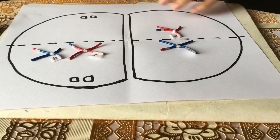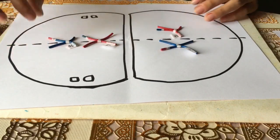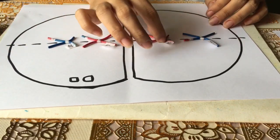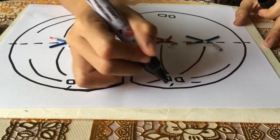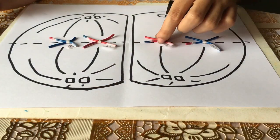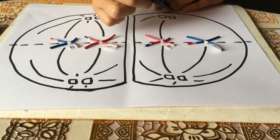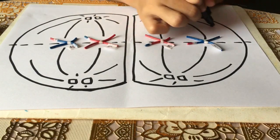In metaphase II, in each of the two daughter cells, the chromosomes line up end to end along the equator of the cell. The centrioles are now at opposite poles in each of the daughter cells, and the meiotic spindle fibers at each pole of the cell attach to each of the sister chromatids.